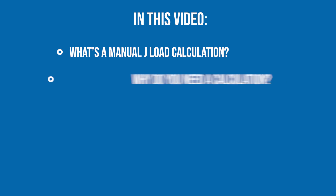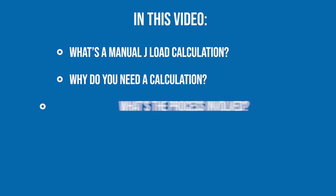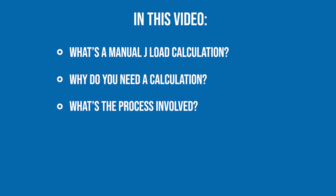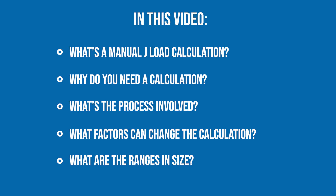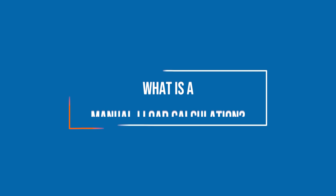In this video, we'll cover: what's a Manual J load calculation, why do you need a calculation, what's the process involved, what are some factors that can change the calculation, and finally, what are the ranges and sizes for your home? By the end of this video, you will know what a Manual J load calculation is and how it's used to determine the best cooling solution for your home. So let's jump into the first question.